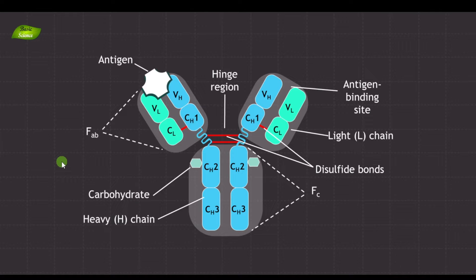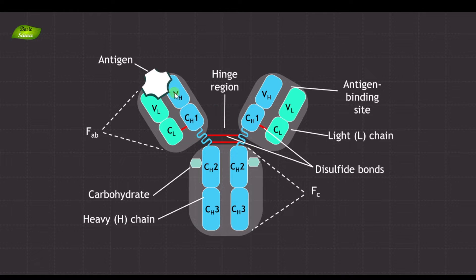Welcome to Basic Science Series. I'm your host Dr. Lukinda Kumar, and today we will be understanding the structure of an antibody. It is also known as immunoglobulin. These are globular molecules, which is why they are known as globulins, and they are part of the immune system — hence also known as immunoglobulins. It's a Y-shaped protein produced by the immune system in response against foreign substances called antigens.